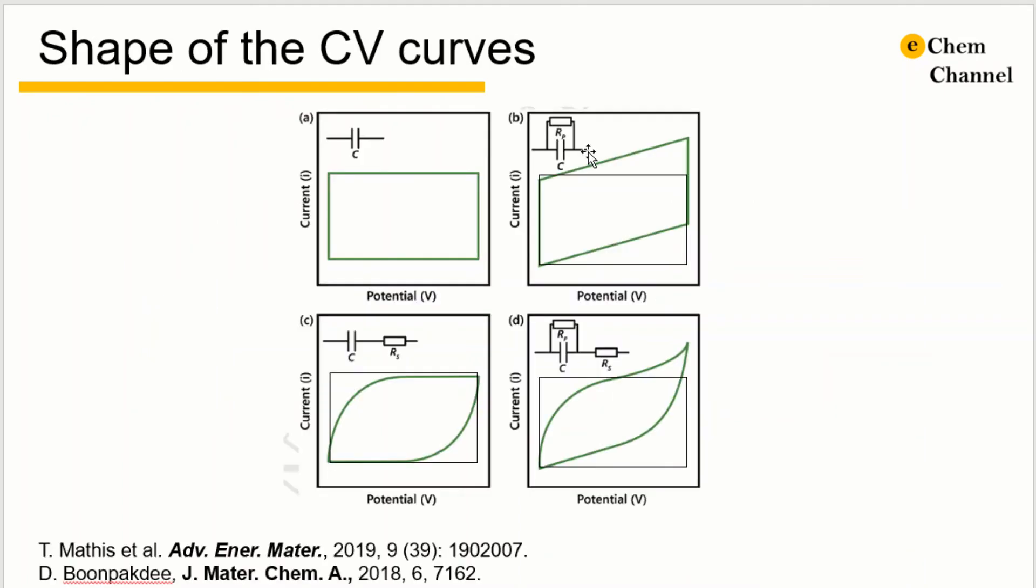The CV curve for the same material could be a lot different due to the fabrication methods and the different type of devices we use. For example, an ideal defect-free single layer graphene electrode should have a perfect rectangular shaped CV as it is ideally electrical double layer capacitive. However, three other CV curves could be observed in practical experiments.